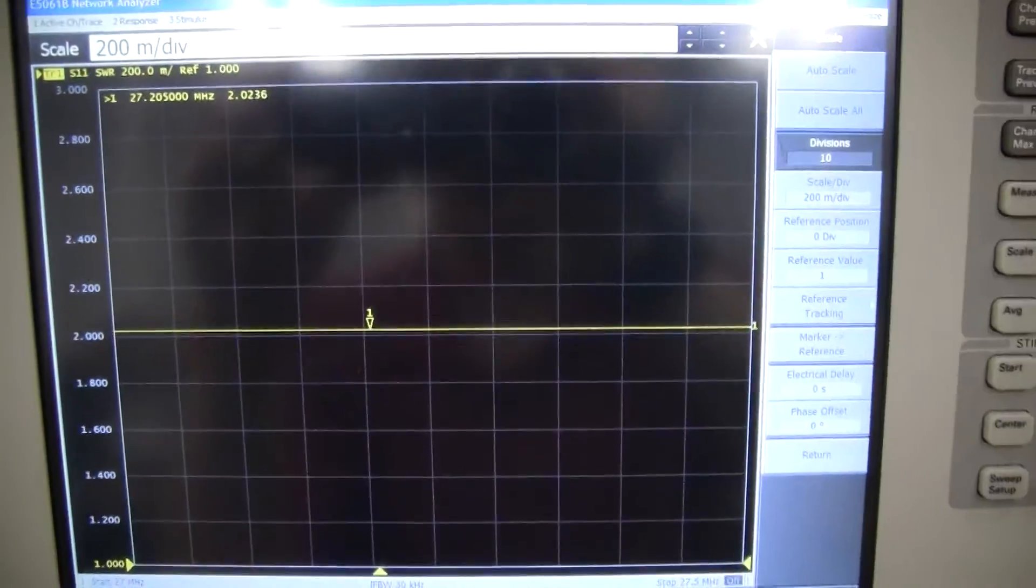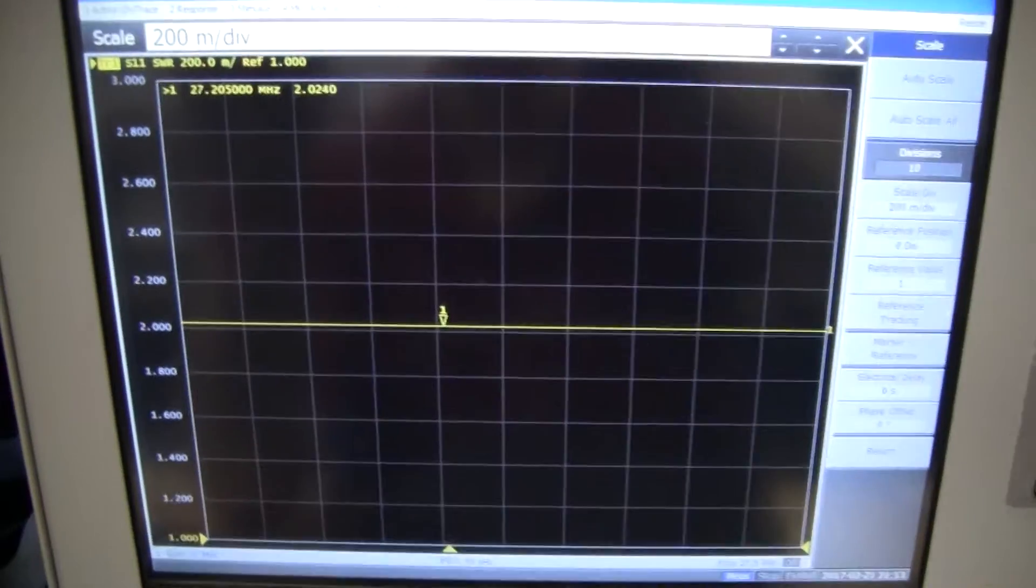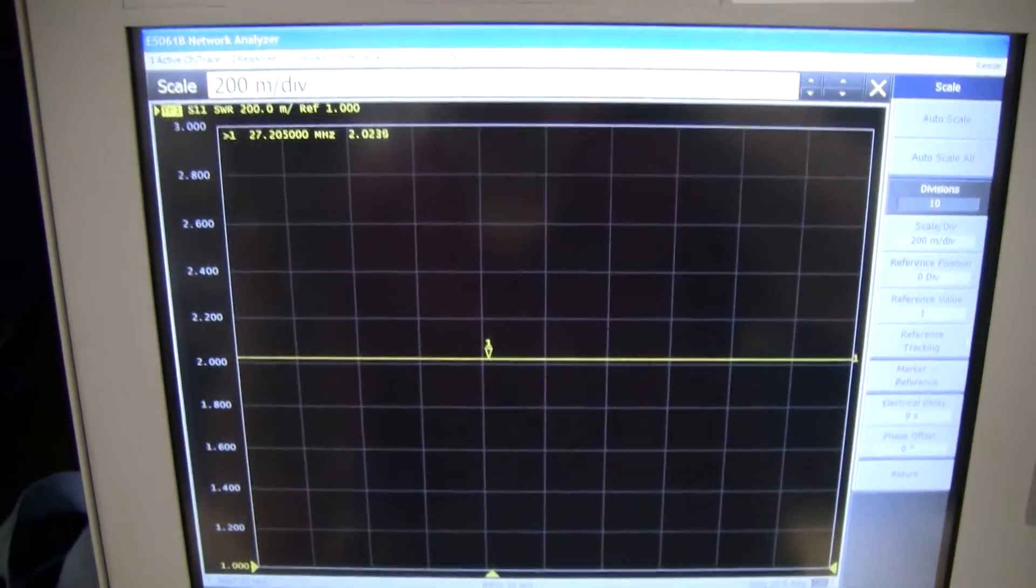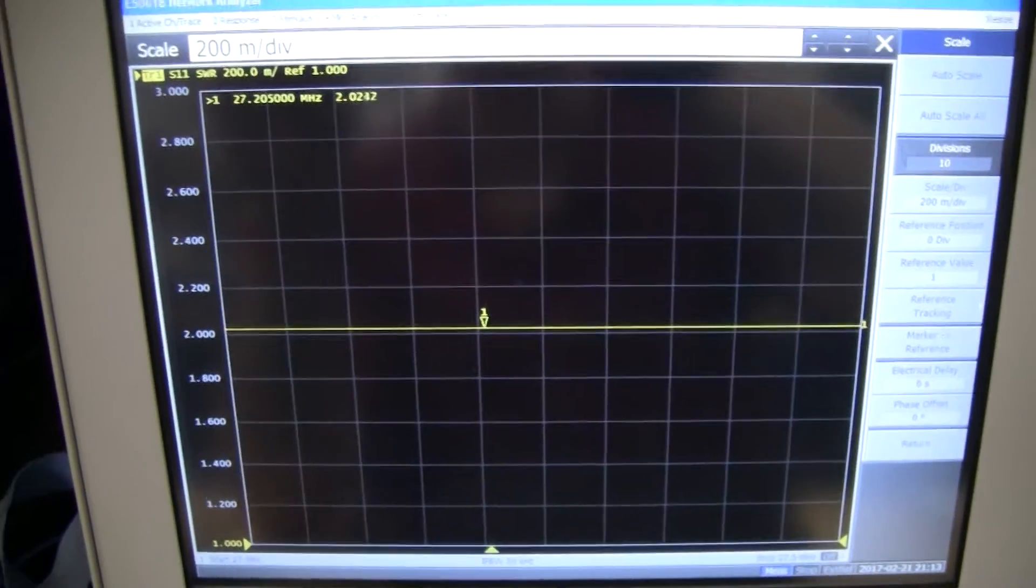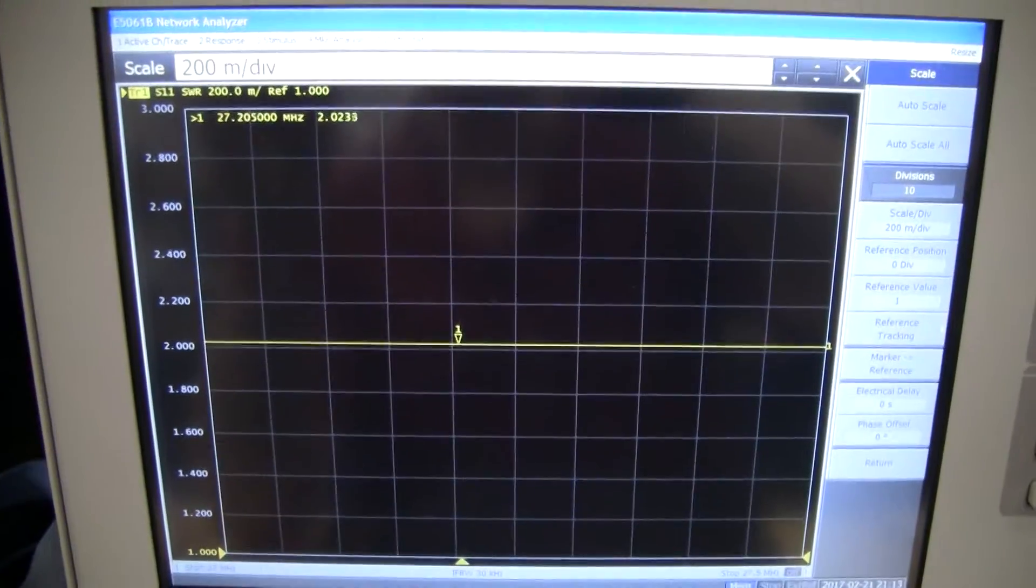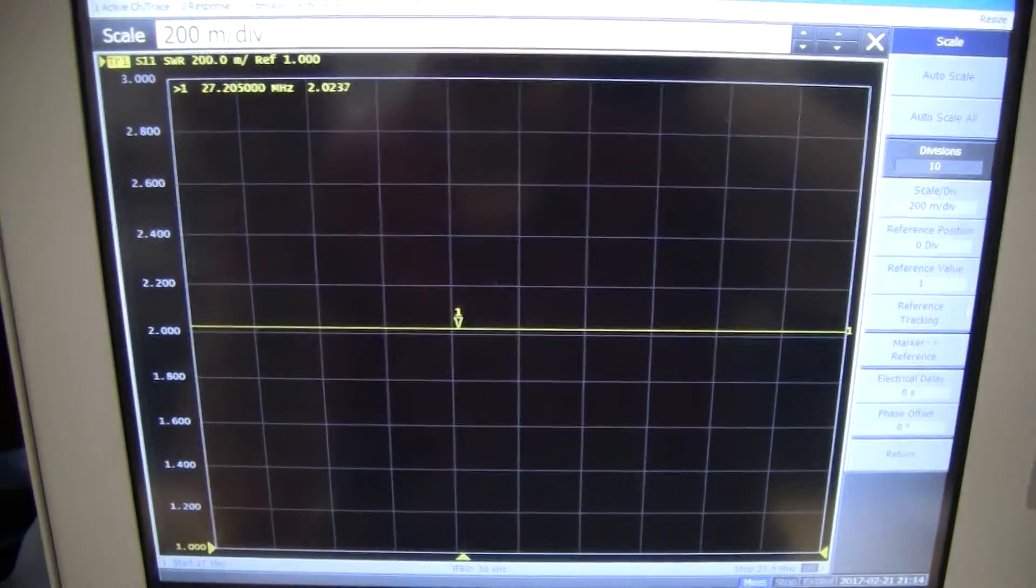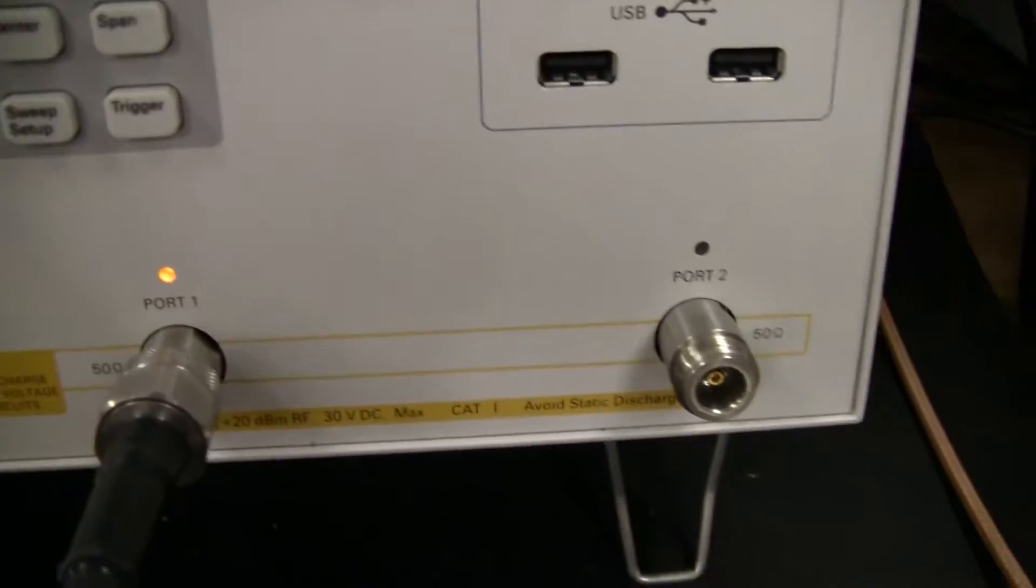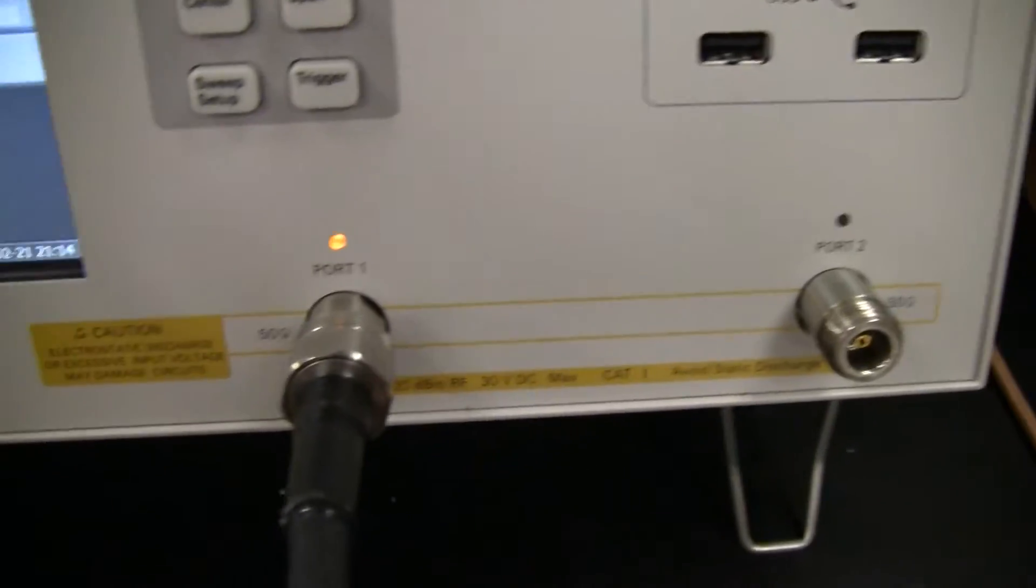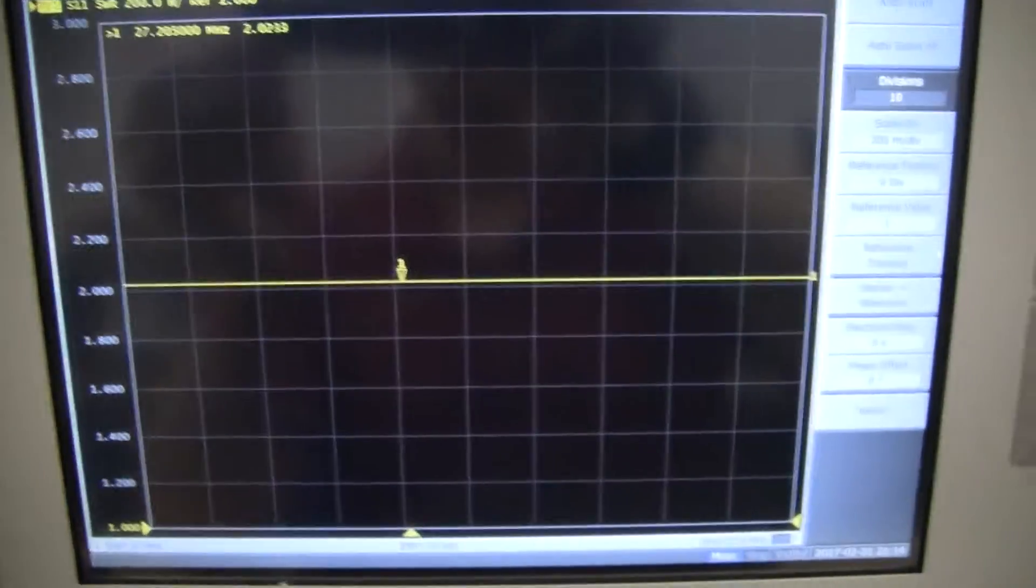Network analyzers are kind of like a CAT scan machine for electronics. It sends out its own signal stimulus and then measures, at least for SWR, it measures the reflected power and then calculates SWR or other parameters. This is one of many functions that you can do with a network analyzer. It's also a two-port device. I'm just using one port. But you can also measure gain and losses. We're just using this one simple measurement.